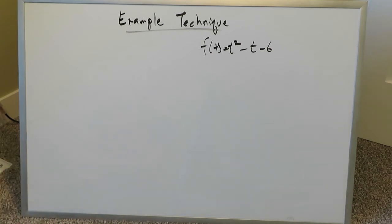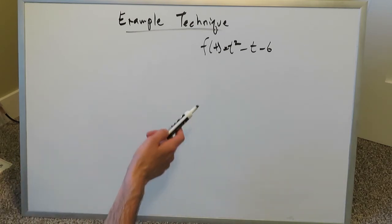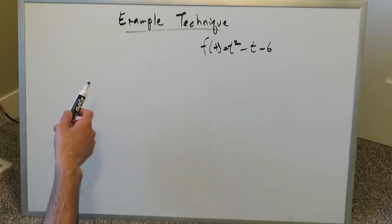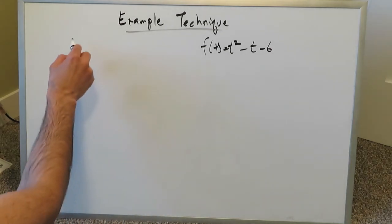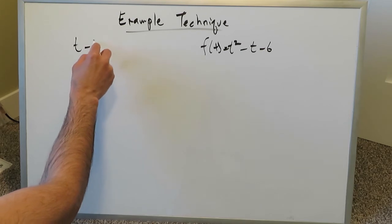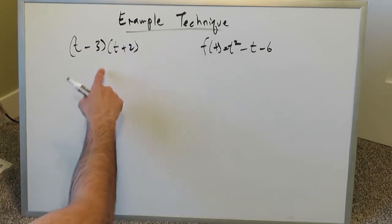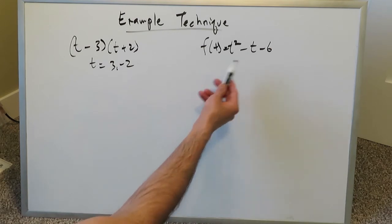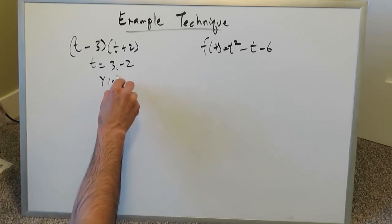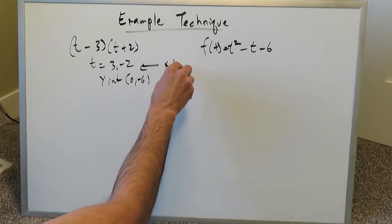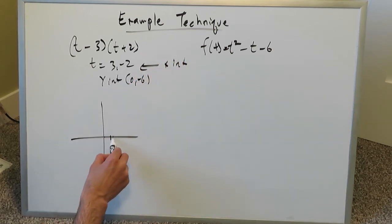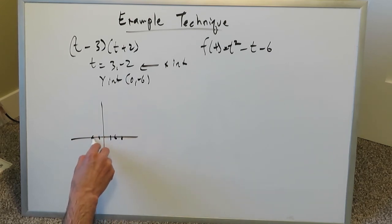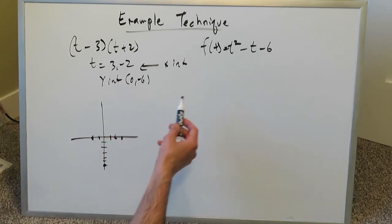We'll look at one quick example to solidify this concept. We have f of t equals t squared minus t minus 6. To distinguish net change from total change, graph it first. Factoring gives t minus 3 times t plus 2, so the t-intercepts are at 3 and negative 2. Setting t equal to zero gives a y-intercept of zero comma negative 6. Plot the points: 3 comma 0, negative 2 comma 0, and 0 comma negative 6.